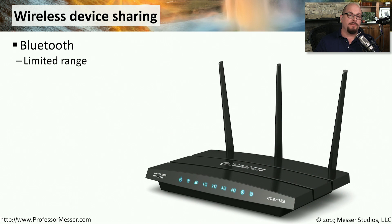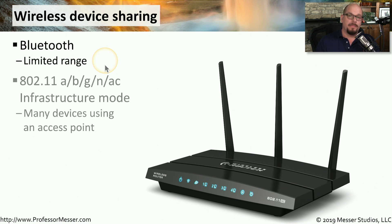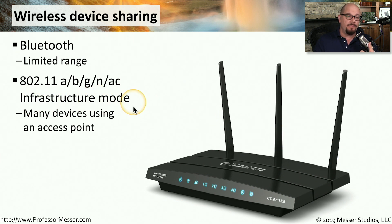Your printer may not have a wired connection — you may have wireless connectivity to that printing device. It's common to see Bluetooth connectivity on many printers so that you can print directly to the printer from a mobile device. Bluetooth obviously has a limited range, but if this is a SOHO environment, then you're probably not very far away from the printer. It's probably more common to see these multi-function devices and printers connect to an existing 802.11 wireless network. If your printer is connecting to this wireless network using an access point in your SOHO, we call this infrastructure mode.